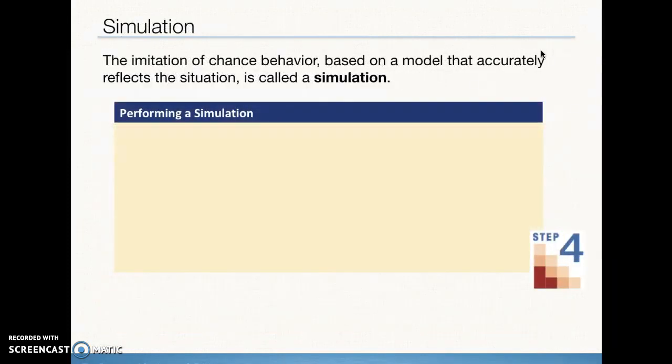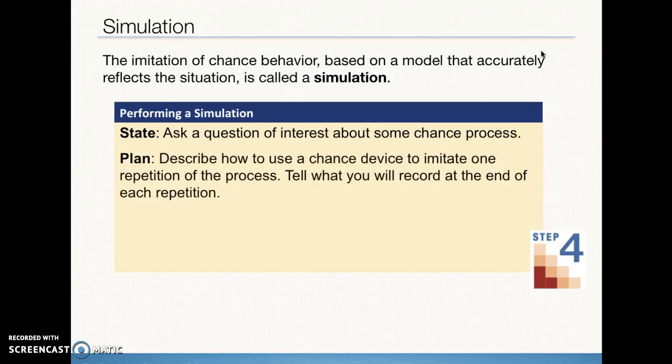Now, the idea behind simulation is when we're trying to imitate, what we want to do is basically gather data, and we're going to imitate the behavior using some other method. It can be technological, such as the random integer feature of our graphing calculators, or it can be something low-tech, like using a die or the random digits table. When we perform a simulation, we basically want to know the assumptions. What is the information that we're trying to learn about? Ask a question of interest about the chance process. Then we need to figure out what it is we're going to do to imitate or simulate that chance process, and what we're going to measure or record.